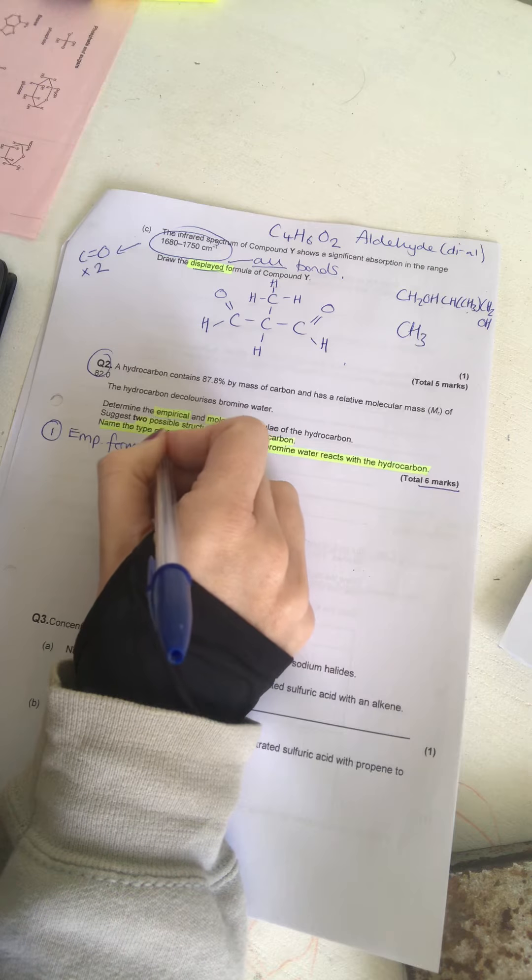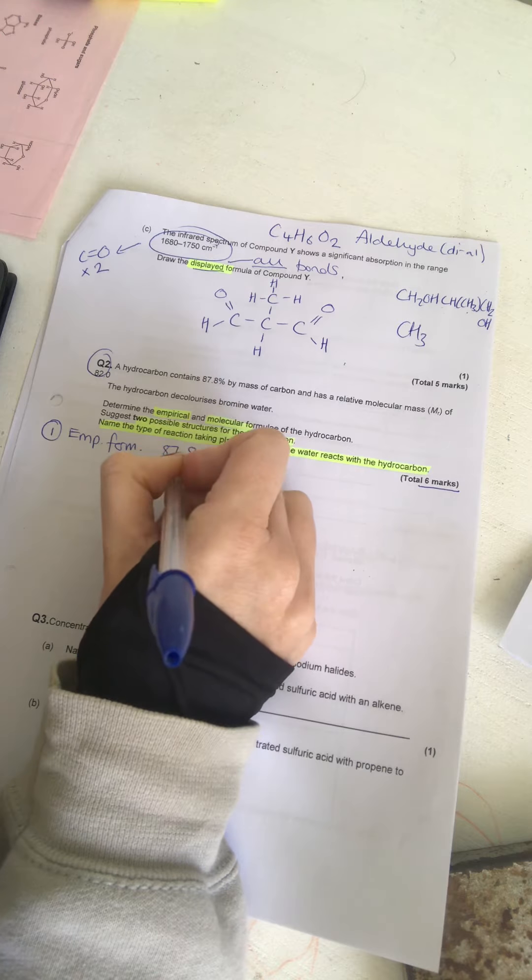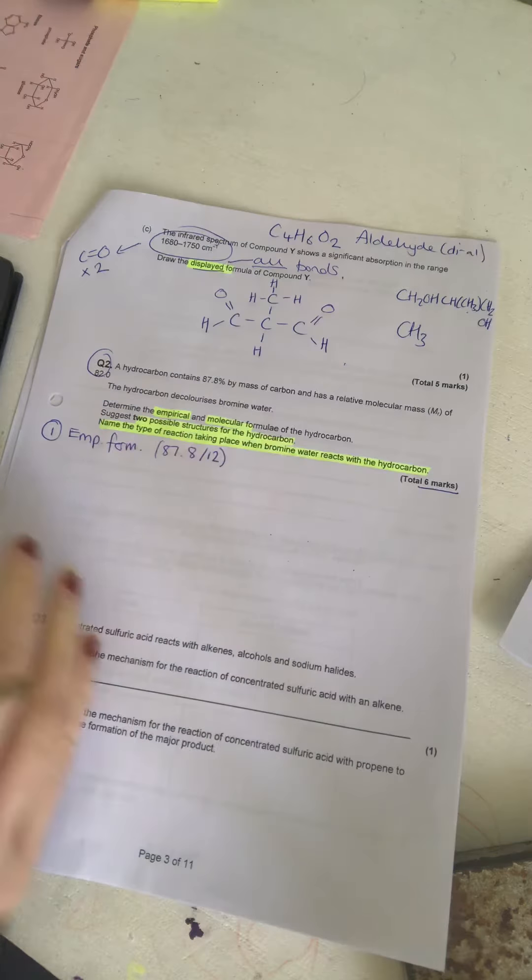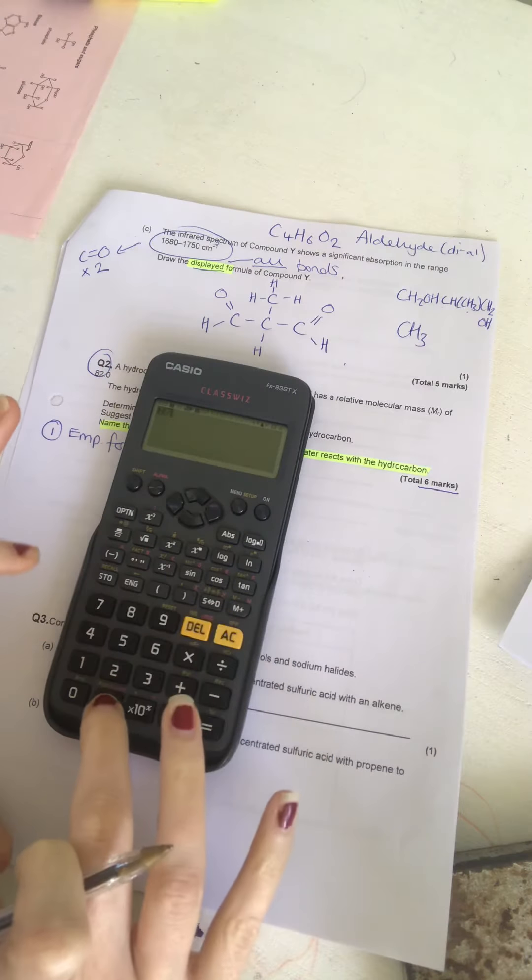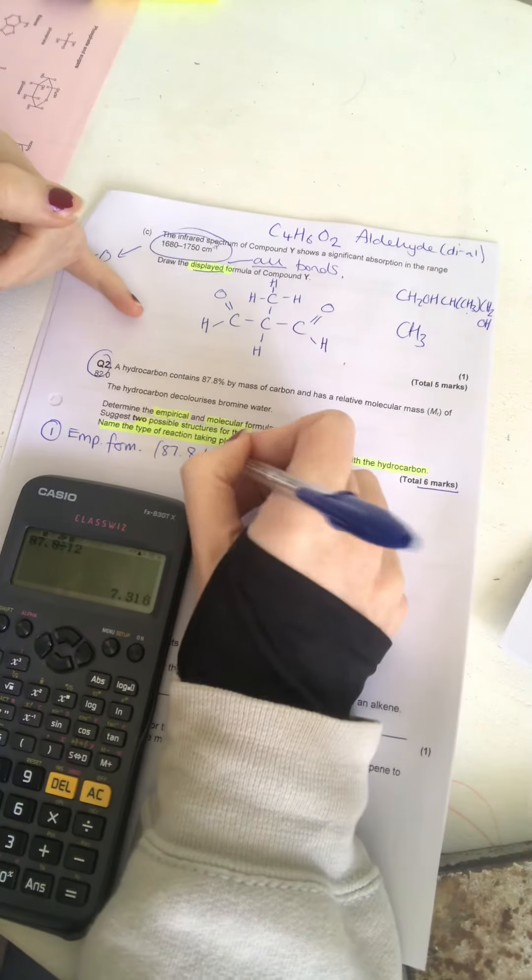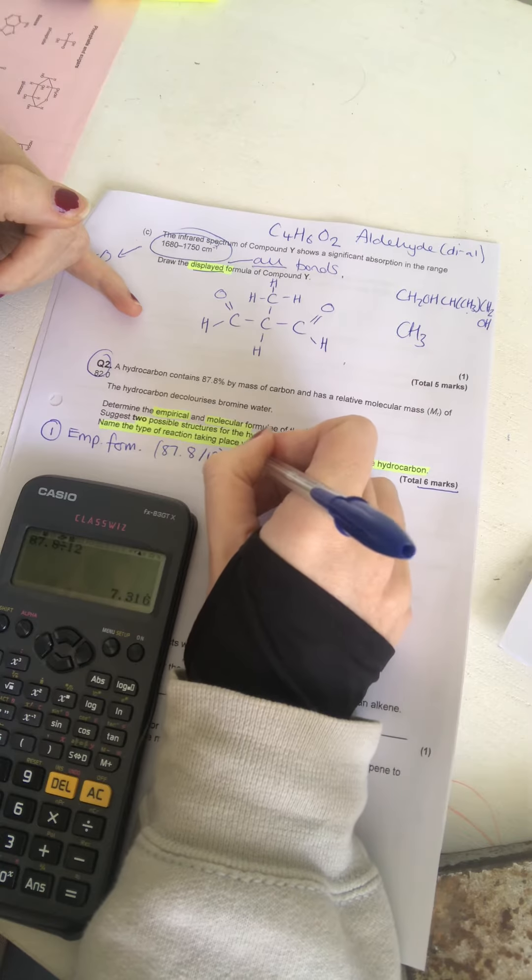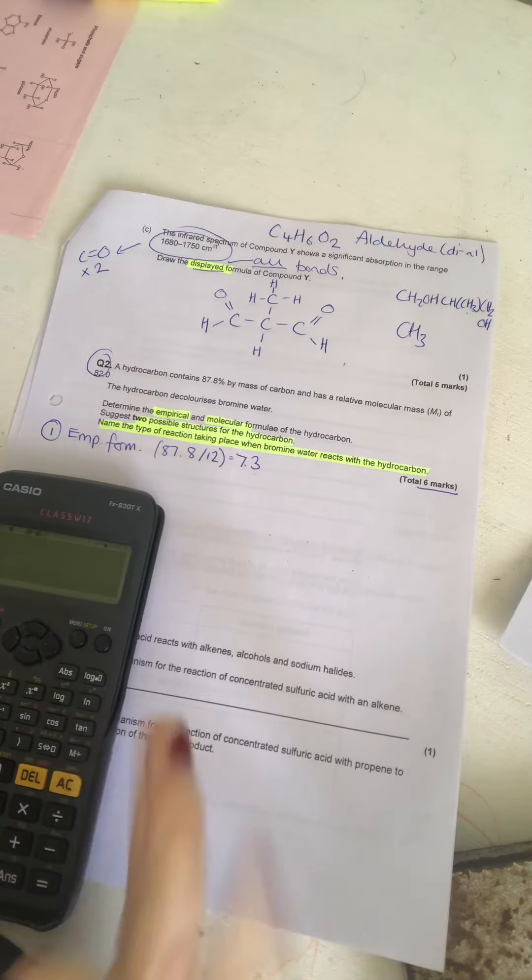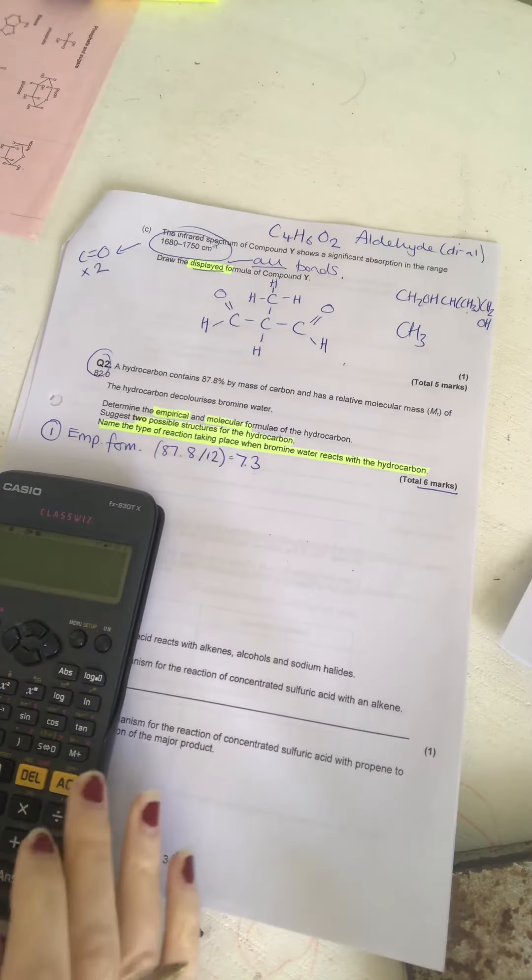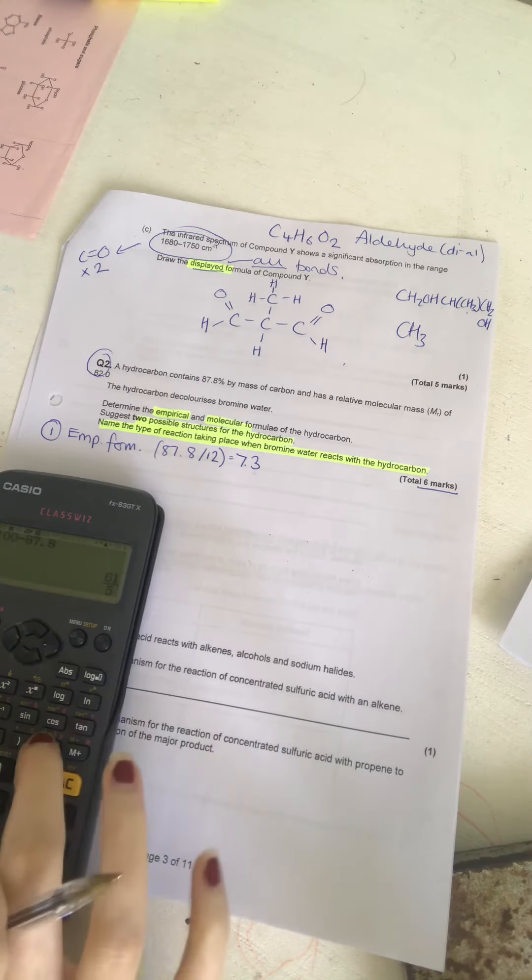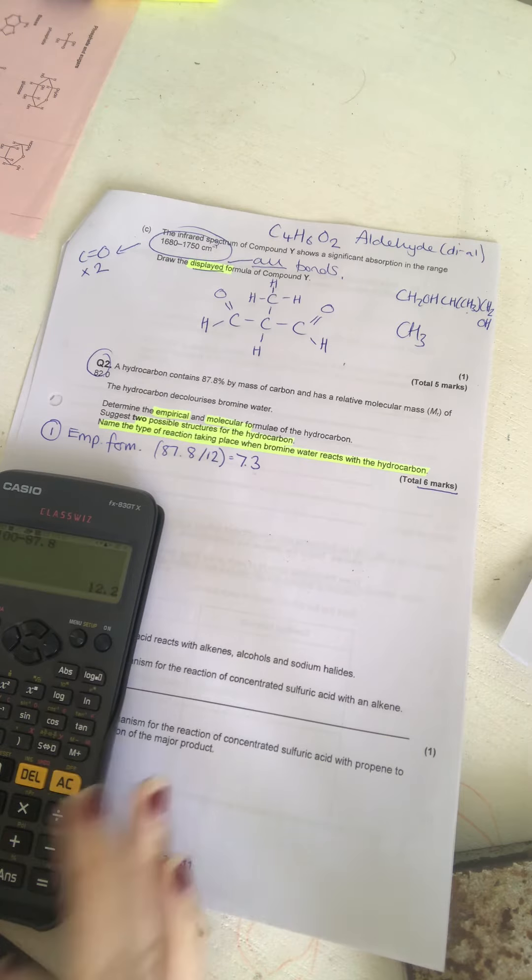Okay, so we've got 87.8% is carbon. So, I'm going to divide that by 12. And that's going to give 87.8 divided by 12 gives you 7.3% carbon. And then, where are we? Hydrogen.